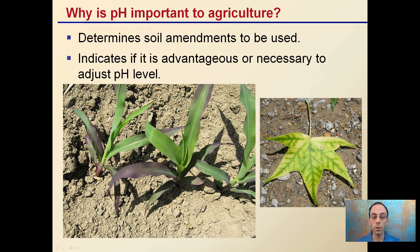On the large scale, pH can determine the amendments that need to be used and indicate if it's advantageous or necessary to adjust the pH level. Sometimes nutrient deficiencies or issues could be due to low amounts of a nutrient present in the soil, or low amounts of that nutrient available to plants in that soil. Simply adding lime or sulfur to correct the pH can correct nutrient deficiencies, because nutrients already present in the soil become plant available.